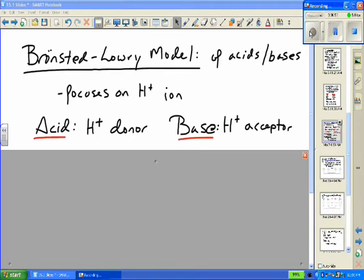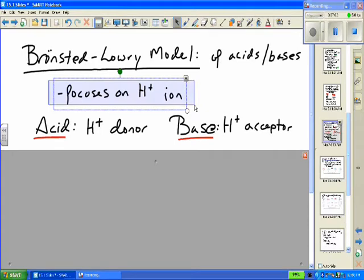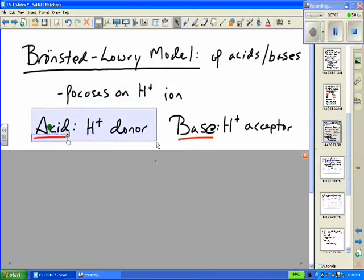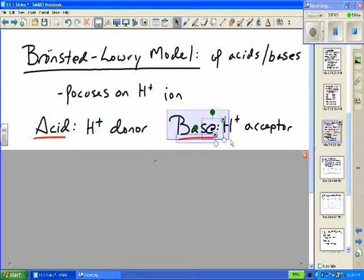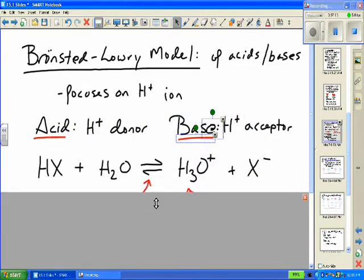Therefore, we need to have another theory or model of acids and bases. And that newer model is called the Bronsted-Lowry model of acids and bases. And it focuses on the hydrogen ion in solution. An acid is defined as anything that is a hydrogen ion donor. And a base is anything that accepts an H-plus ion.